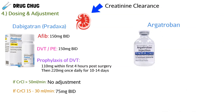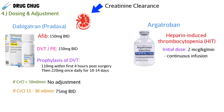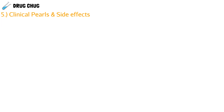For argatroban, the dosing is a little different — it's weight-based. We use it for heparin-induced thrombocytopenia. The initial dose is 2 micrograms per kilogram per minute as a continuous infusion. We monitor the patient and watch for platelet recovery, then adjust accordingly.